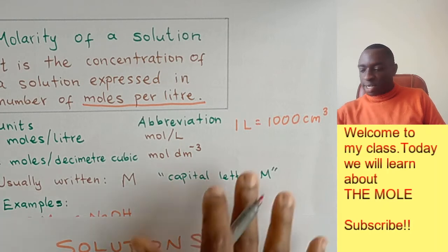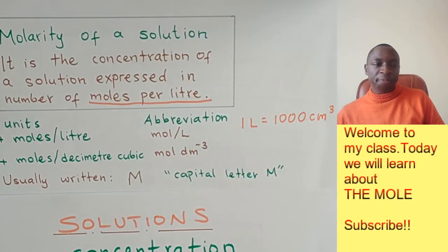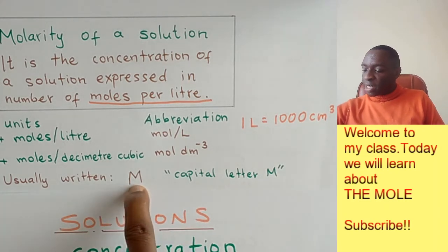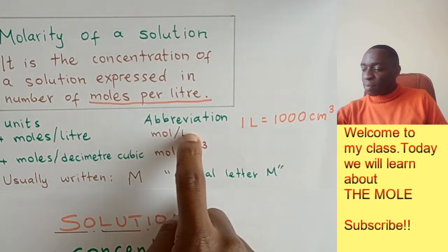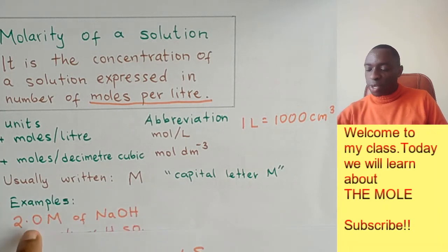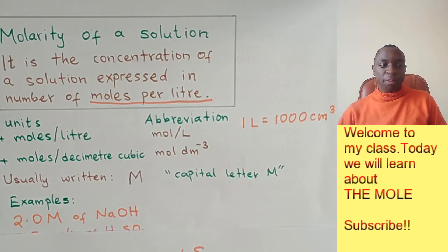So next we look at the other way we usually express our molarity. The molarity is usually expressed as a capital M or written as a capital M because this now stands for moles per liter. For instance, if you have something like 2.0 M of sodium hydroxide, that means 2.0 moles per liter of sodium hydroxide.